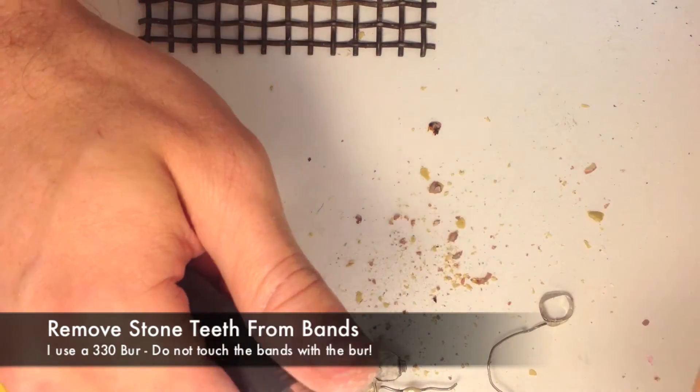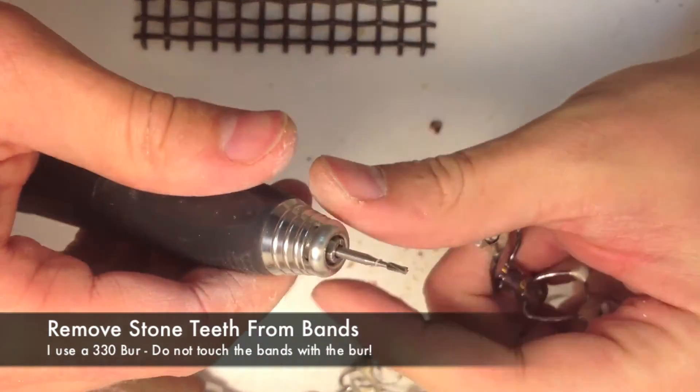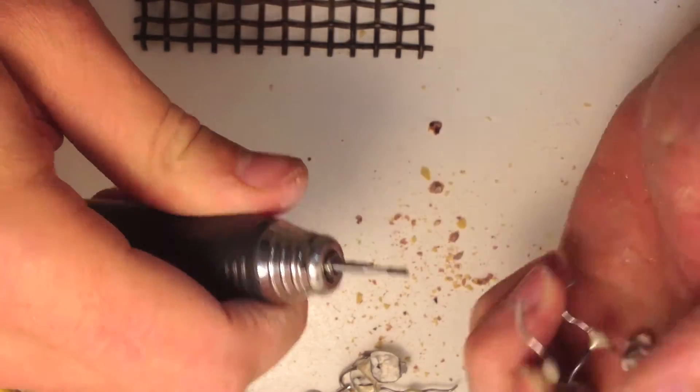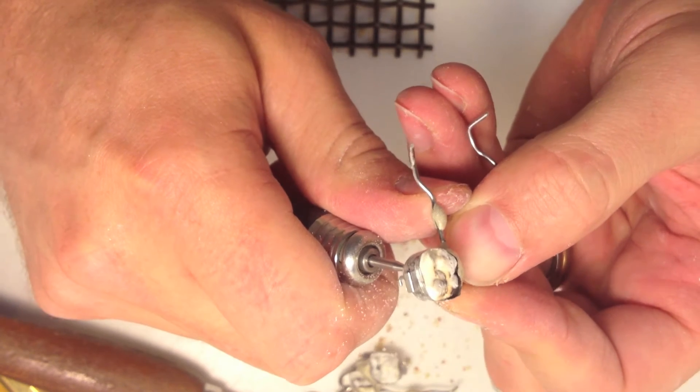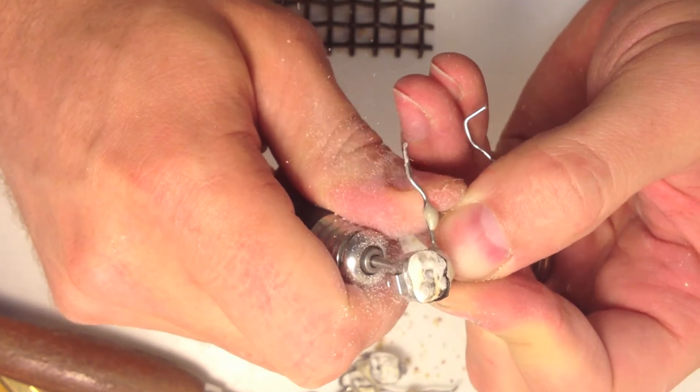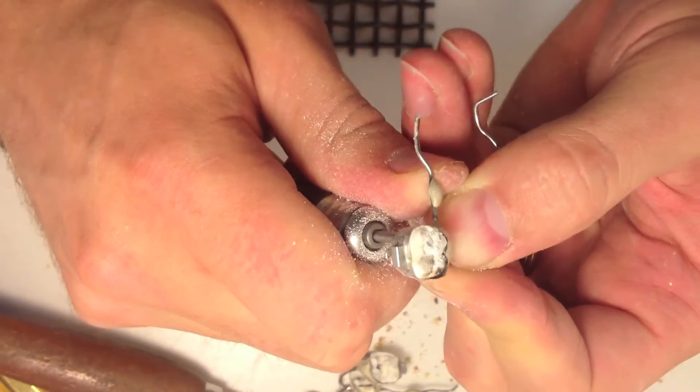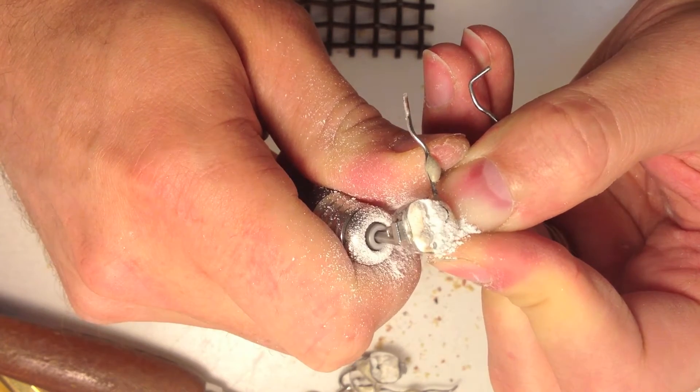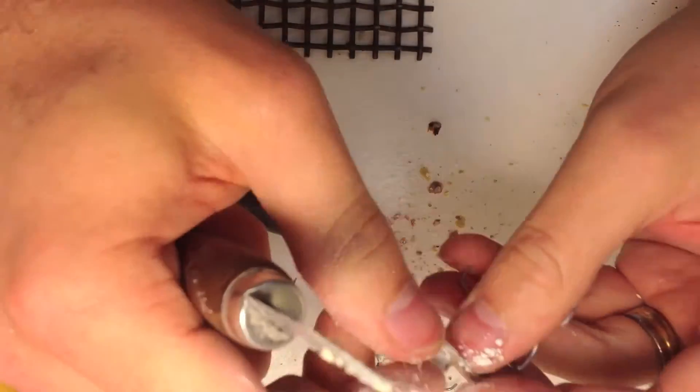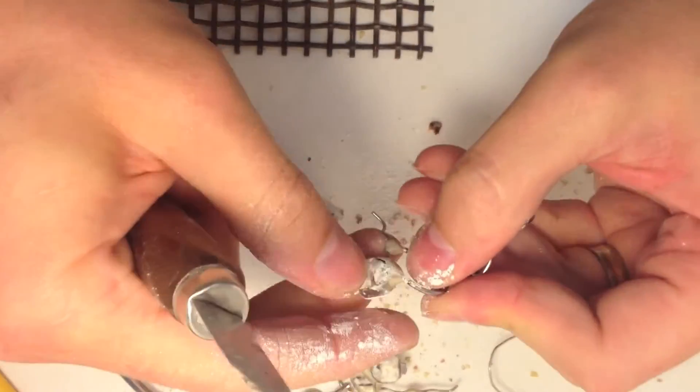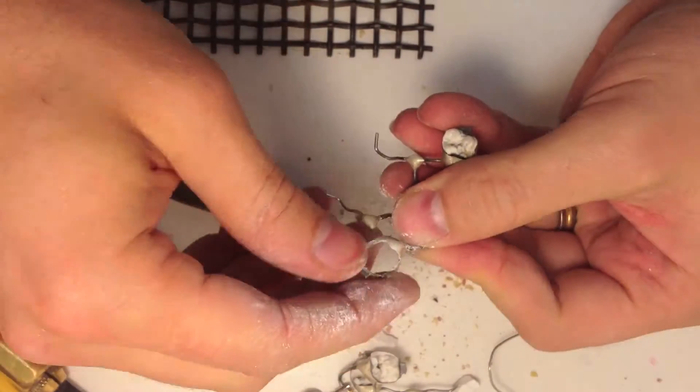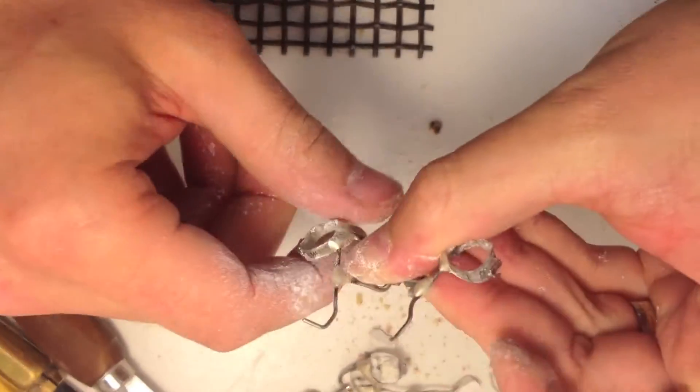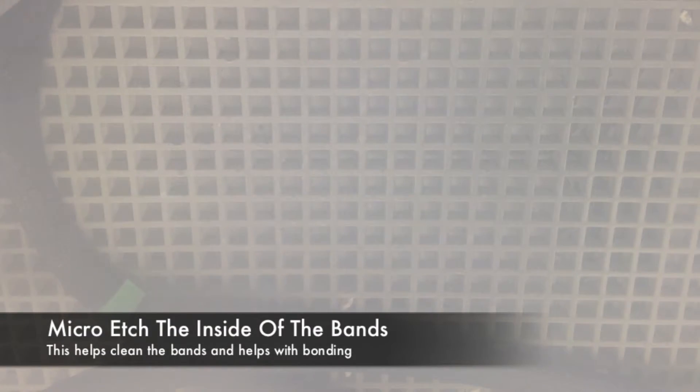Now the fastest way to get the teeth out is I like to use this 330 bur. It's like a little fluted thing. Cut them out. Let's go right to the middle first and then go to the side. Do not go all the way to the side. Do not want to cut your metal band or you will be making a terrible phone call to the doctor saying you need a new impression and a new band. See how that came out, made a slot in there. It should just break free.